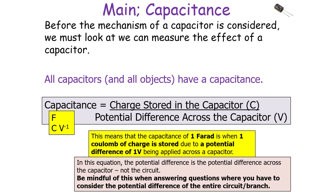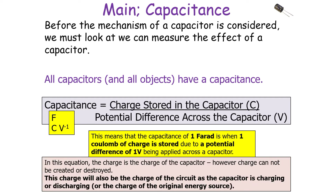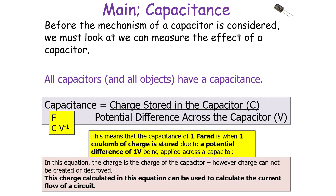Remember that in this equation the potential difference is the potential difference across the capacitor, not the potential difference of the circuit — be mindful of this when answering questions involving the potential difference of an entire circuit or branch. The charge used in the equation is the charge of the capacitor; however, since charge cannot be created or destroyed, this charge is also the charge of the circuit, and can be used to calculate the current flow of the circuit the capacitor is attached to.